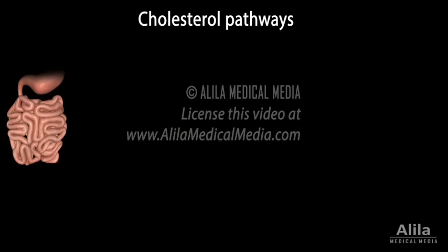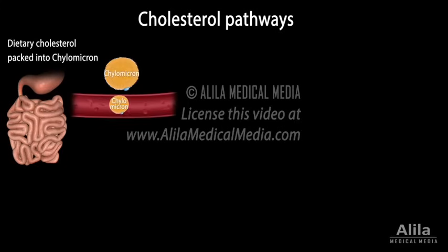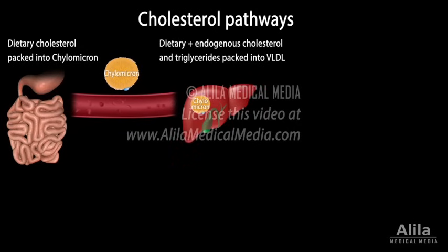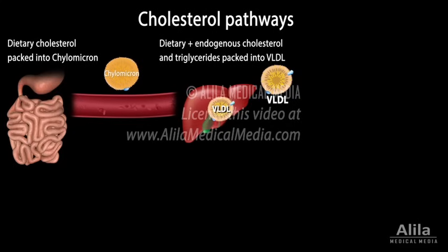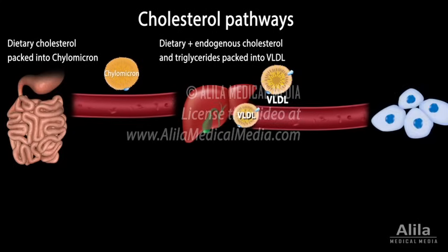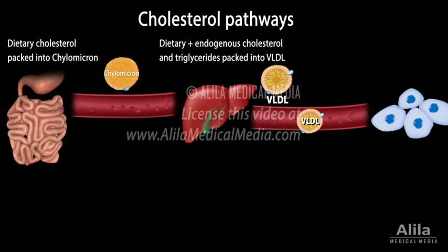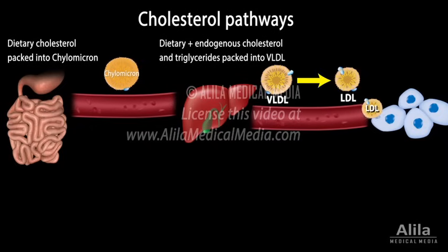Major events in cholesterol metabolism include: dietary cholesterol is absorbed in the intestine and carried via blood circulation to the liver. The liver packages its cholesterol pool — a combination of endogenous and dietary — together with triglycerides, another type of lipid, into particles of very low-density lipoprotein, VLDL. VLDL travels in the bloodstream to other organs. During circulation, muscle and adipose tissues extract triglycerides from VLDL, turning it into low-density lipoprotein, LDL.